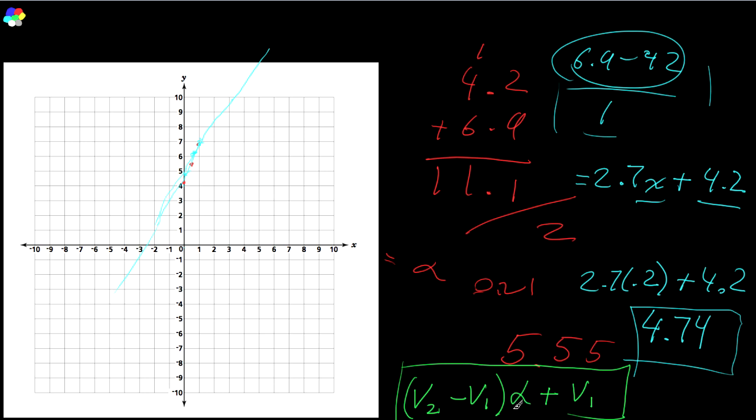So when alpha is 1, you're going to get all v2. And when alpha is 0, you're going to get all v1. Because 0 times this cancels out, you just get v1. So there you go. There's your linear interpolation.